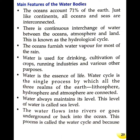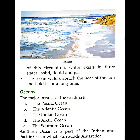Water always maintains its level, and this level of water is called sea level. Water flows into rivers, goes underground, or back into the ocean. This process is called the water cycle, and because of this circulation, water exists in three states: solid, liquid, and gas. The ocean waters absorb the heat of the sun and hold it for a long time.